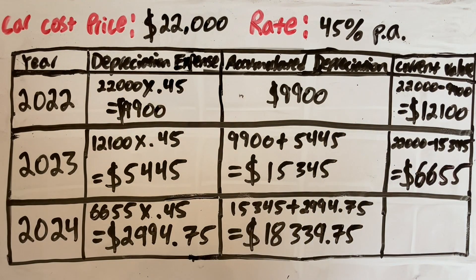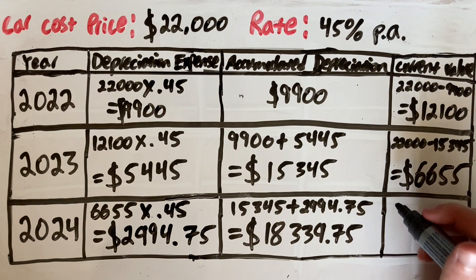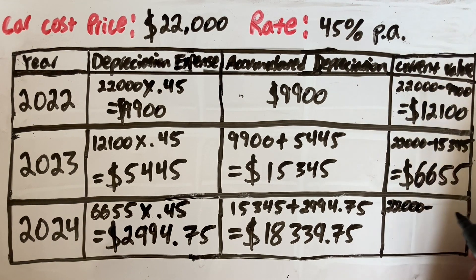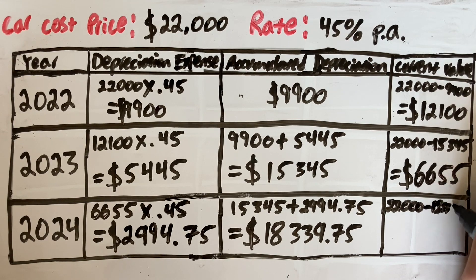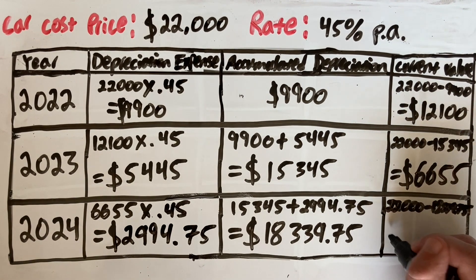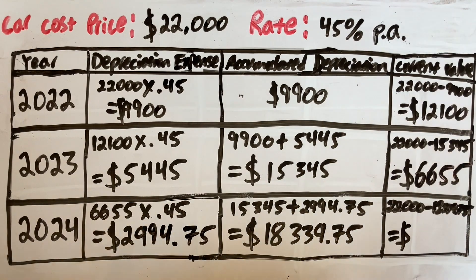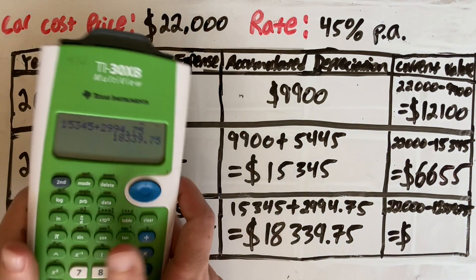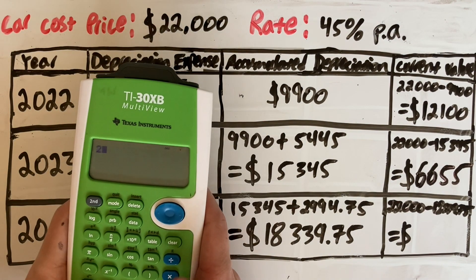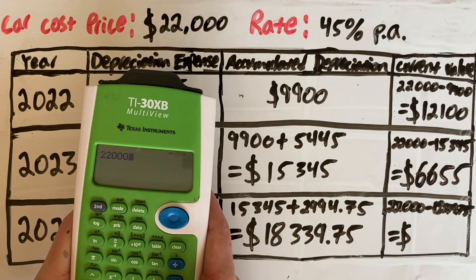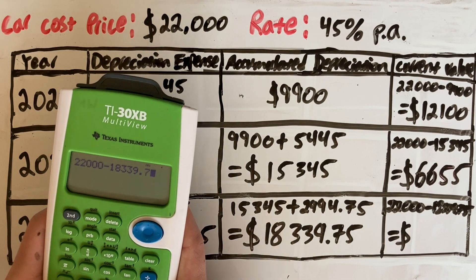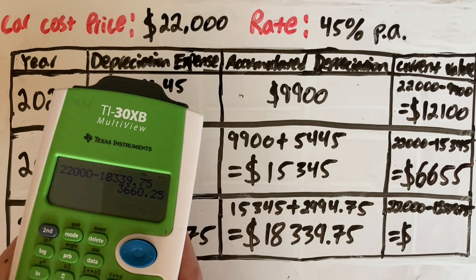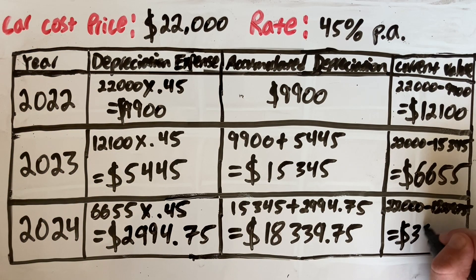The last thing to do is work out our current value or what the car is worth after these three years. Again, it's the original value of the car which was $22,000 minus your accumulated depreciation which is $18,339.75. That gives our current value of the car after the three years to be $3,660.25.